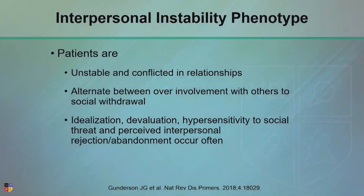We can look at genetics, and we can look at functional imaging, the endophenotype, and there are four main types of borderline patients. To me, this is the new material.